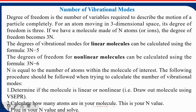The number of vibrational modes depends on the structure of the molecule. For a linear molecule, the vibrational modes are 3N − 5, and for a non-linear molecule, it is 3N − 6. Whether the molecule is linear or non-linear is decided on the basis of VSEPR theory — valence shell electron pair repulsion theory — which determines the geometry of the molecule.